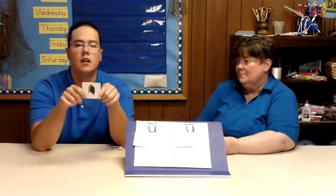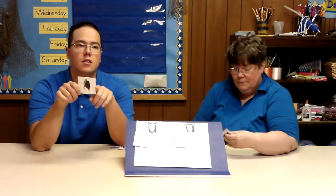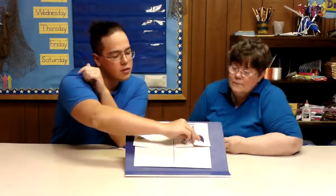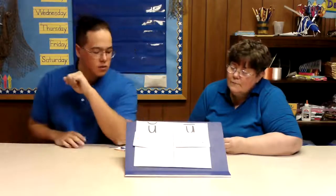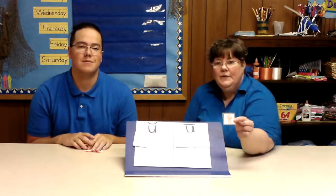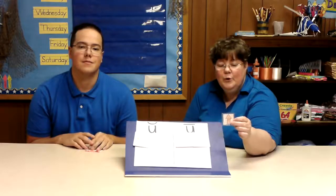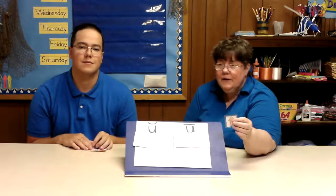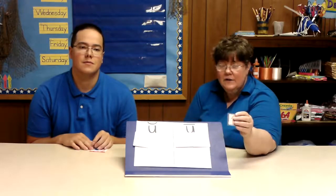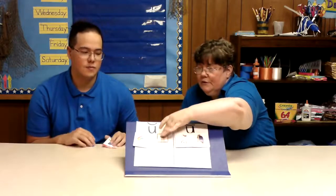So next what I'm going to do is a picture of a uniform. So that makes the 'yoo' sound. So that one should go over here with the long U sounds. I have an arrow pointing up, so it's the word 'up.' Up has that 'uh' sound — it does not say its name. So we will put it with the short U sound.